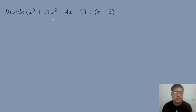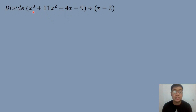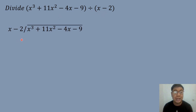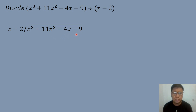So let's have our first example. Divide X to the third power plus 11X squared minus 4X minus 9, divided by X minus 2. The first step is to write the equation in long division form. So we have X minus 2, the divisor, dividing into X to the third power plus 11X squared minus 4X minus 9, which is the dividend.